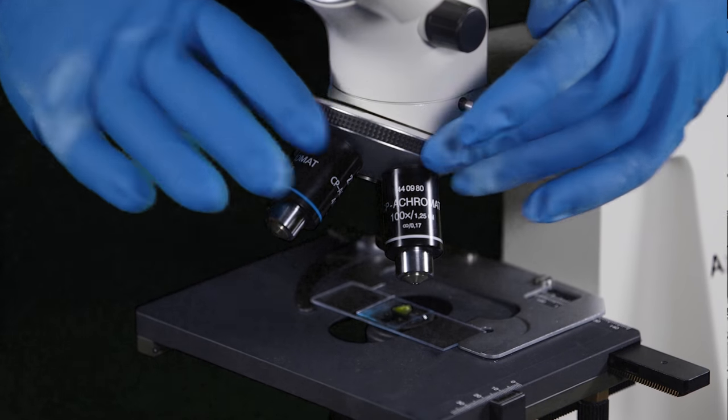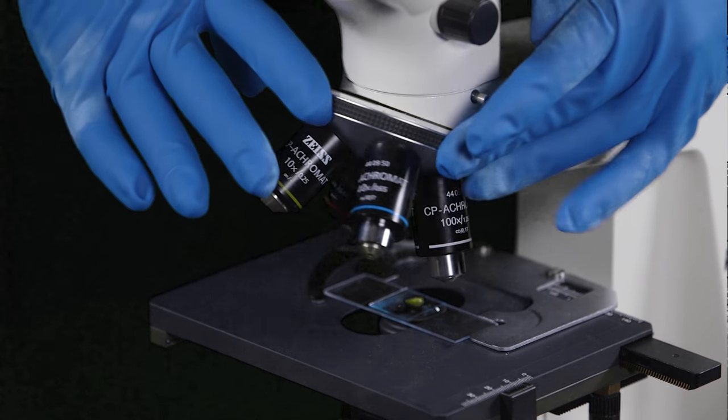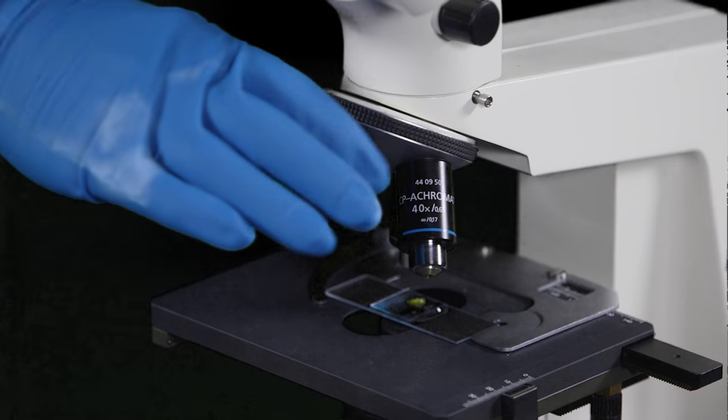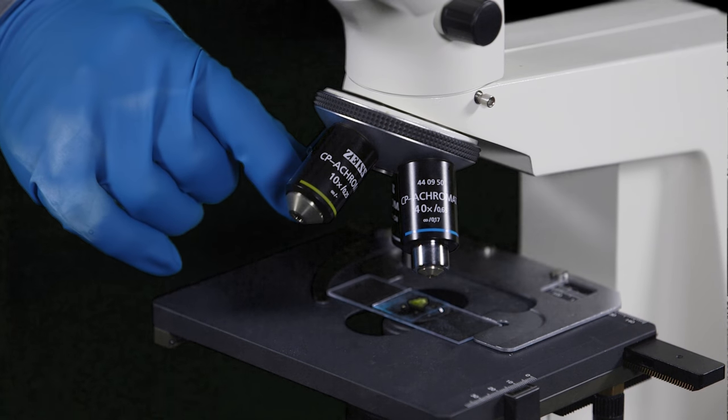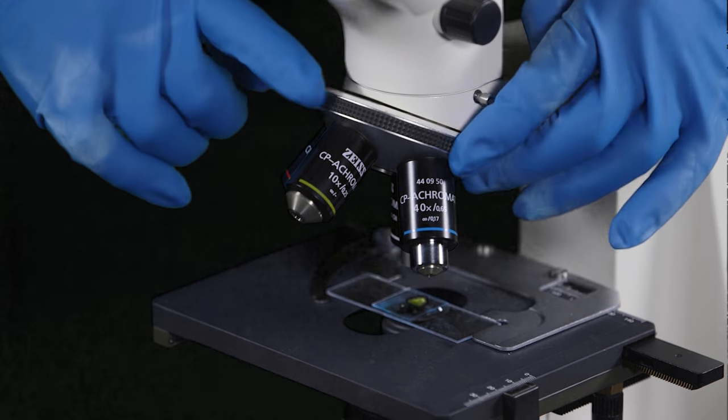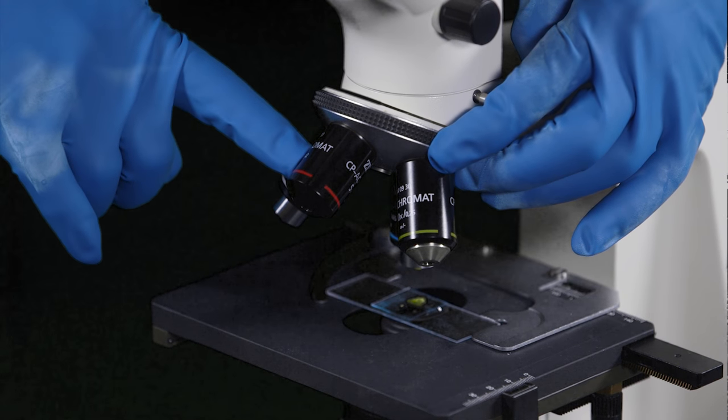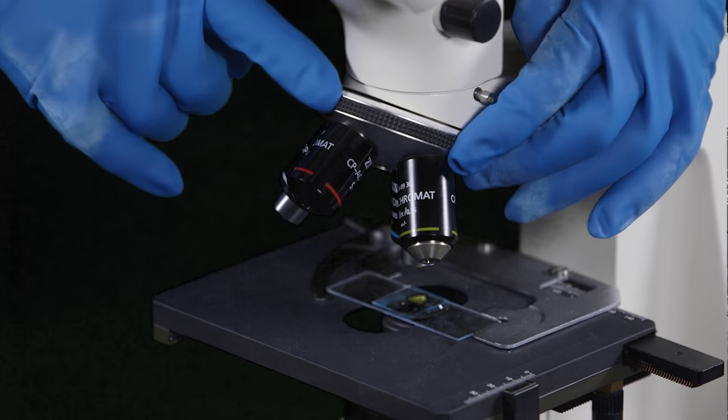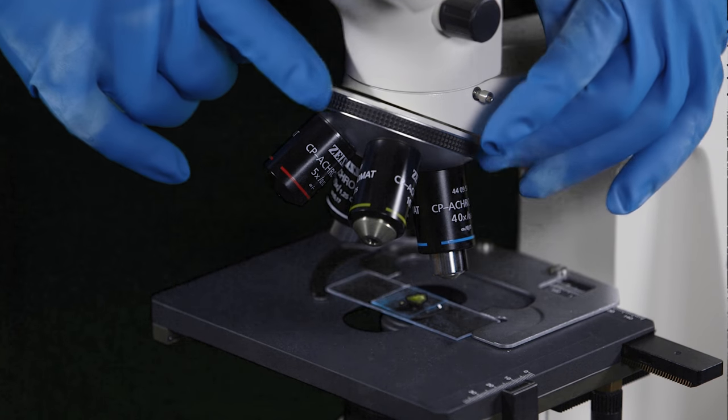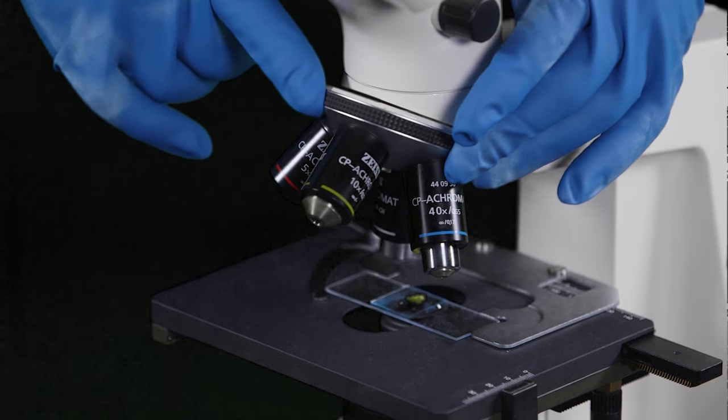Grip the turret to rotate the objectives. Do not pull or push on the objectives. Here is your lowest power objective, also referred to as the scanning objective. That's a 5x objective on this scope.